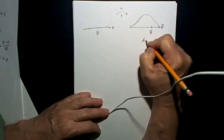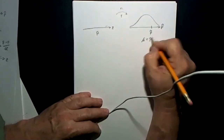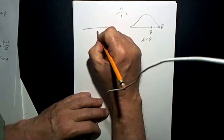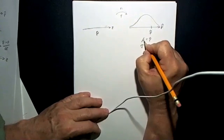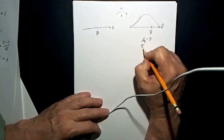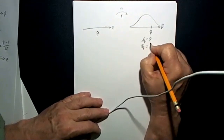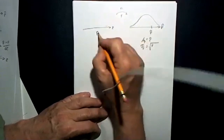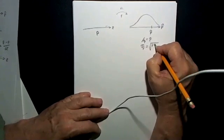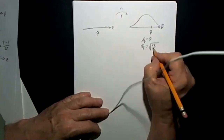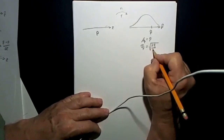The mean of these sample proportions is going to be whatever the population proportion p is. The standard deviation of these sample proportions is going to be the square root of p — the probability of this occurring — times q, the probability of it not occurring (q is always equal to 1 minus p), all divided by n.